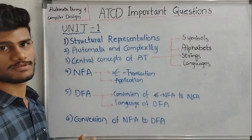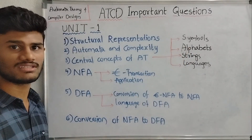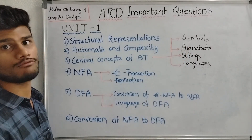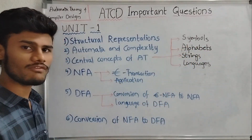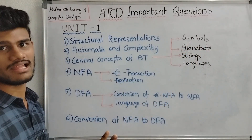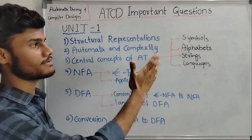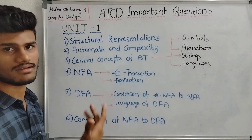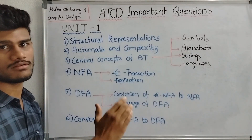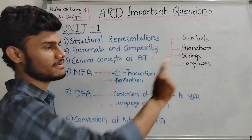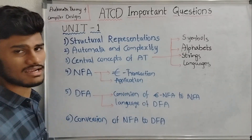Next, we have the Central Concepts of Automata Theory. In this unit, we have Symbols, Alphabets, Strings and Length, and Language. We can explain the definitions and examples of each. Topics include derived and described alphabets. We can explain examples of each language concept.